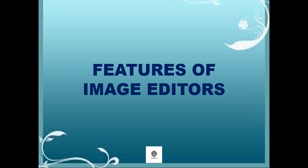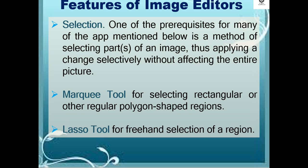Let's discuss features of image editors. The first feature is selection — one of the prerequisites for many operations is a method of selecting parts of an image, thus applying a change selectively without affecting the entire picture. Features include the marquee tool for selecting rectangular or other regular polygon-shaped regions, and the lasso tool for freehand selection of a region.